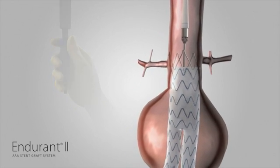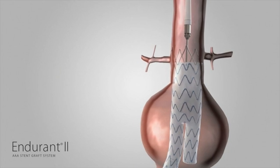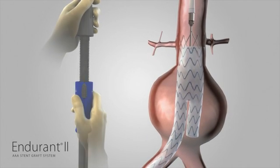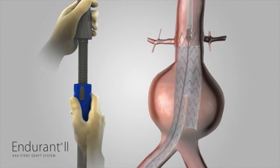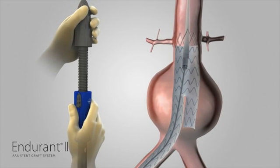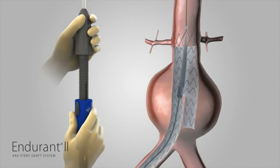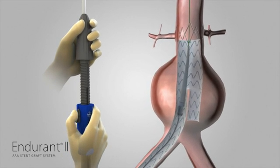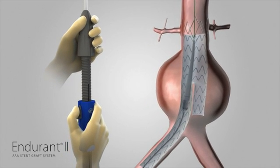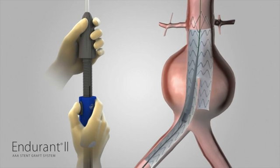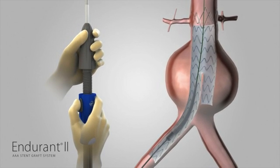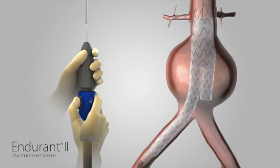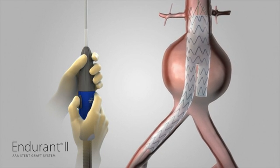To configure for removal, continue to hold the delivery system with one hand on the front grip and the other hand on the slider. Gently torque and withdraw the delivery system counterclockwise until the spindle is retracted into the fabric portion of the stent graft. Pull back the slider trigger and hold the slider stationary while bringing the front grip to the slider. Gently remove the delivery system using fluoroscopy to ensure that the stent graft does not move during withdrawal.